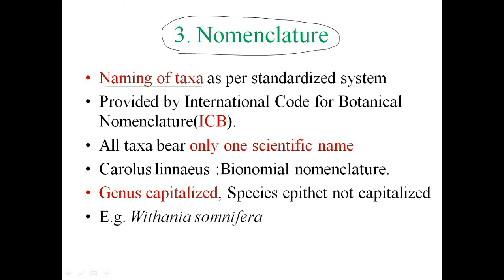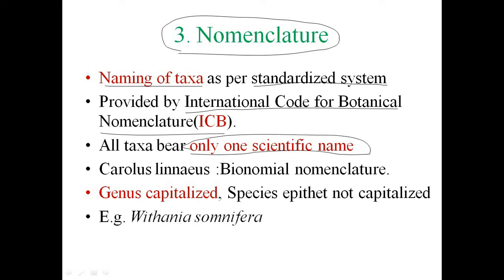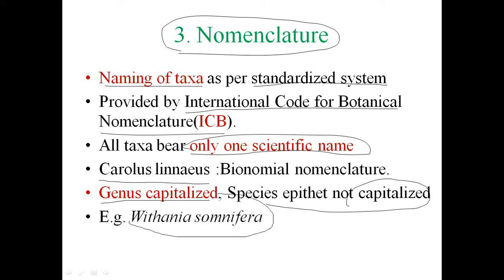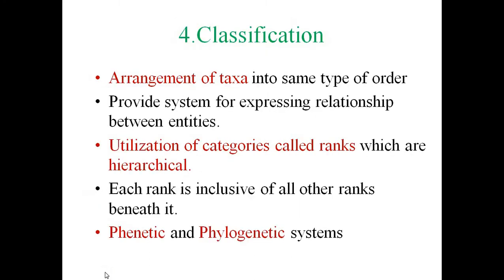The third important step for taxonomic identification is nomenclature — giving a name to taxa using a standardized system. In plants, this is provided by the International Code for Botanical Nomenclature (ICBN). This standardized system gives only one scientific name to one plant, and the credit for binomial nomenclature goes to Carl Linnaeus. For binomial nomenclature, the genus is capitalized and the species is not; in printed form it should be italic, and in written form it should be underlined.